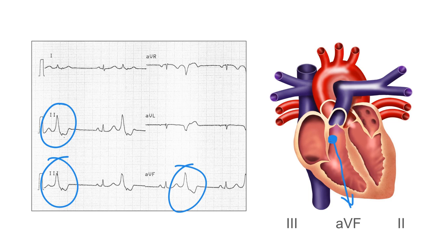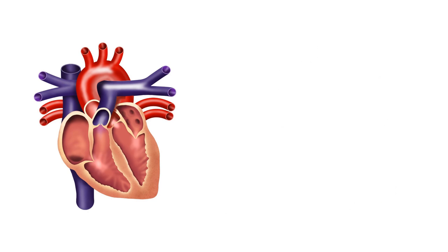Conversely, if a ventricular ectopic beat arises at the apex and travels towards the base, then we'd expect to see negative QRS complexes in the inferior leads, because the impulse is travelling away from those leads. And that's really all there is to it — it's a very simple and quick process to work out which ventricle and which part of the ventricle the ventricular ectopic beats are arising from.